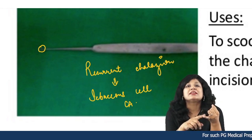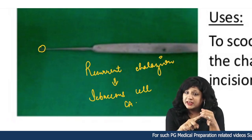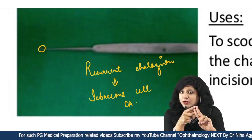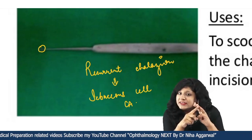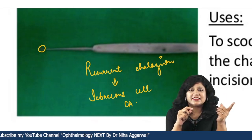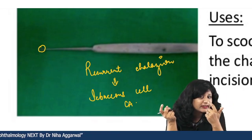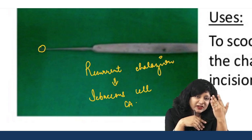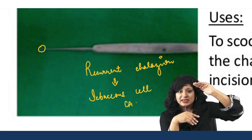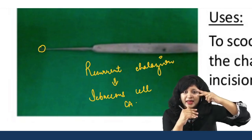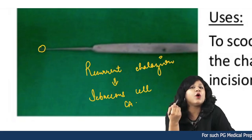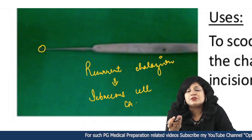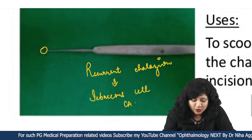So, the first instrument is the Chalazion clamp — it has a solid ring and a hollow circular ring, and the hollow ring is used on the conjunctival side. The treatment of choice is I&D: horizontal incision on the skin side so it hides in the skin creases, and vertical incision on the conjunctival side after everting the eyelid. We stabilize the Chalazion with the clamp, give the incision with a scalpel blade, and then do the curettage with the Chalazion scoop.